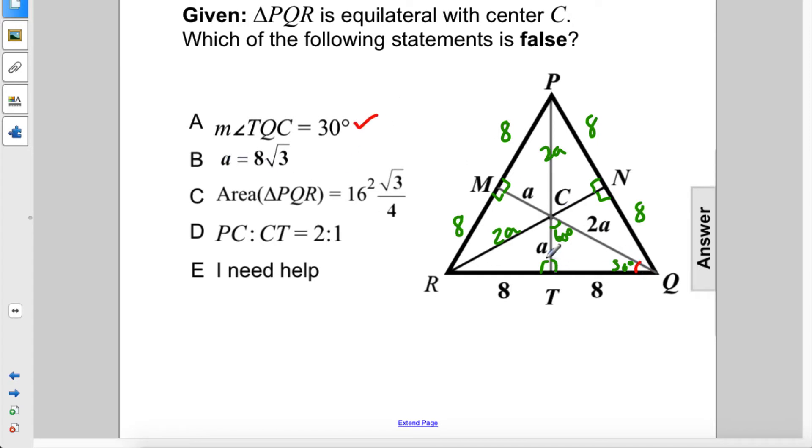A equals 8 times the square root of 3. Well let's see. The ratio of a short leg to a long leg in a 30-60-90 triangle is A to A times the square root of 3. We know the long leg equals 8. So if we divide both sides by the square root of 3...